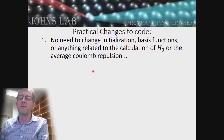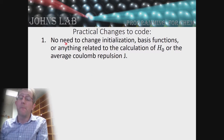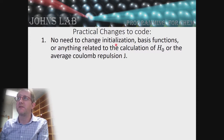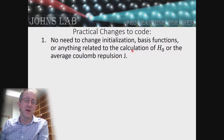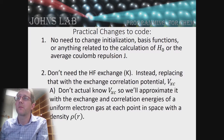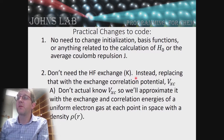Let's talk about practical changes to the code. Most of the code we don't have to change — we don't need to modify initialization, basis functions, the initial Hamiltonian H-naught, or the average Coulomb repulsion J. We don't need the Hartree-Fock exchange; instead we're going to replace that with the exchange-correlation potential Vxc.